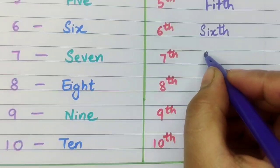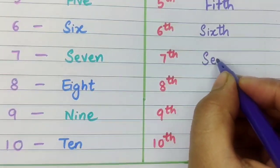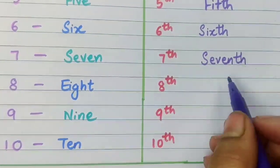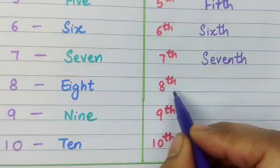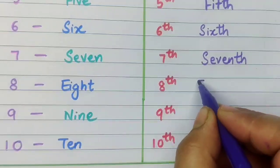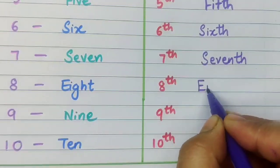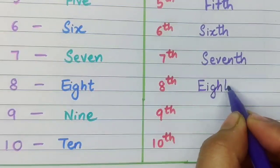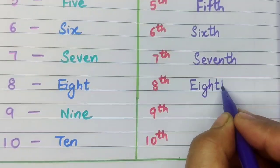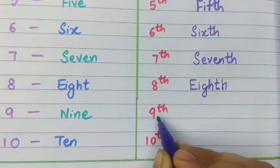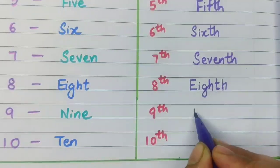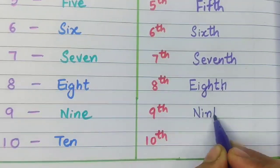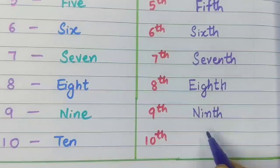Seventh is written as S, E, V, E, N, T, H — seventh. Eighth is written as E, I, G, H, T, H — eighth. Ninth is written as N, I, N, T, H — ninth.